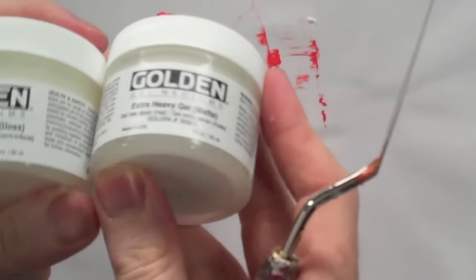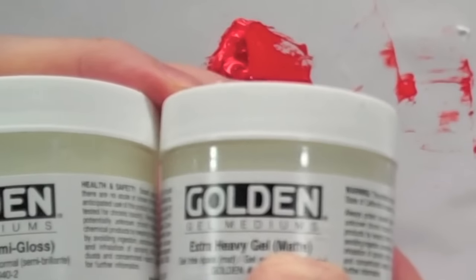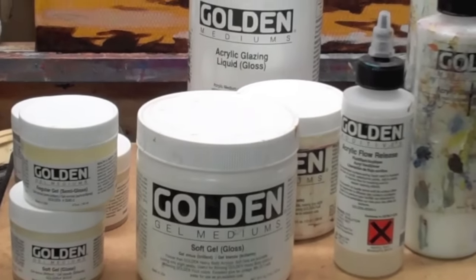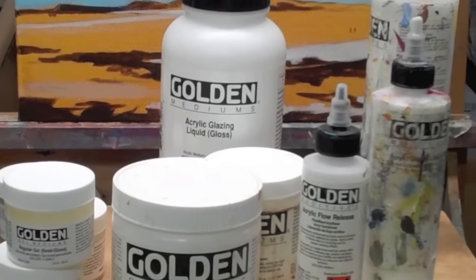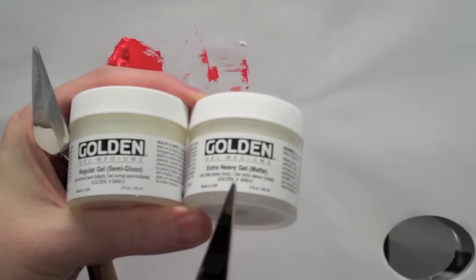Now this one is an extra heavy gel and you see how this has matte in brackets. So gels usually come in semi-gloss, matte or gloss, and it's entirely up to you which finish you like best to work with.